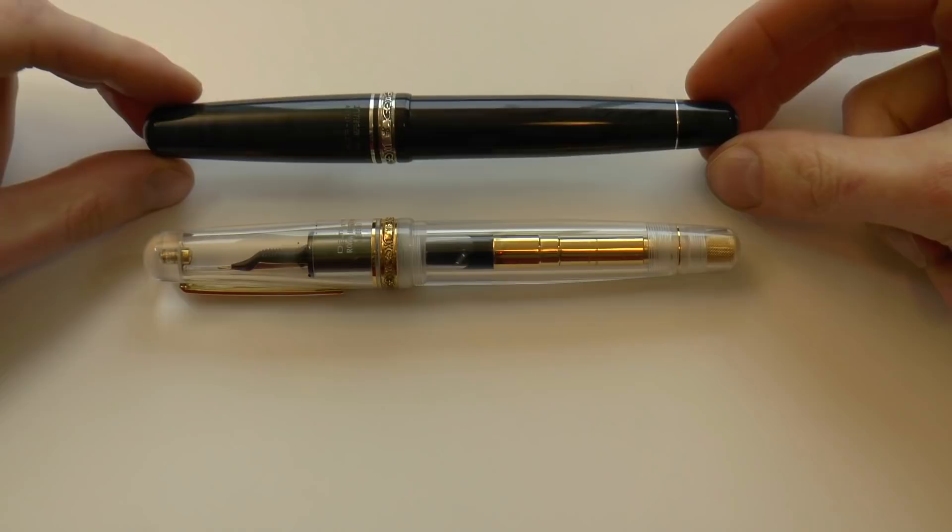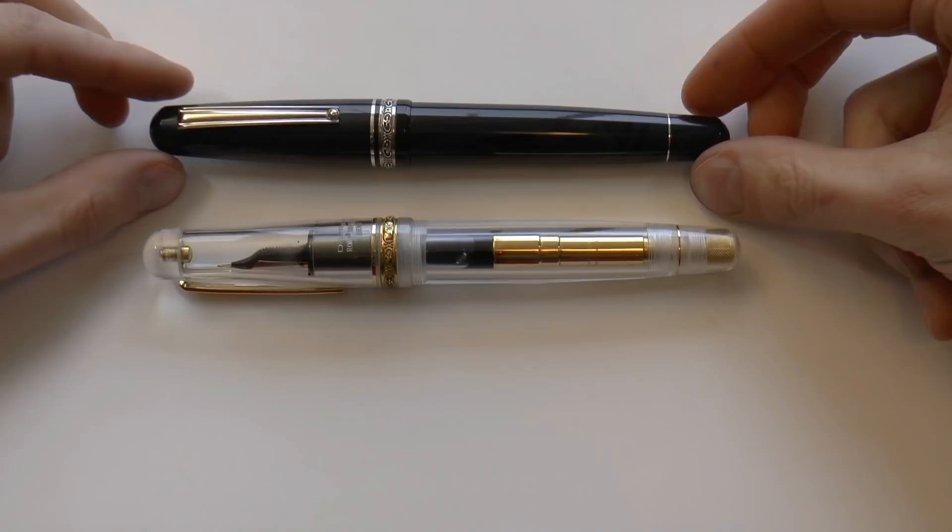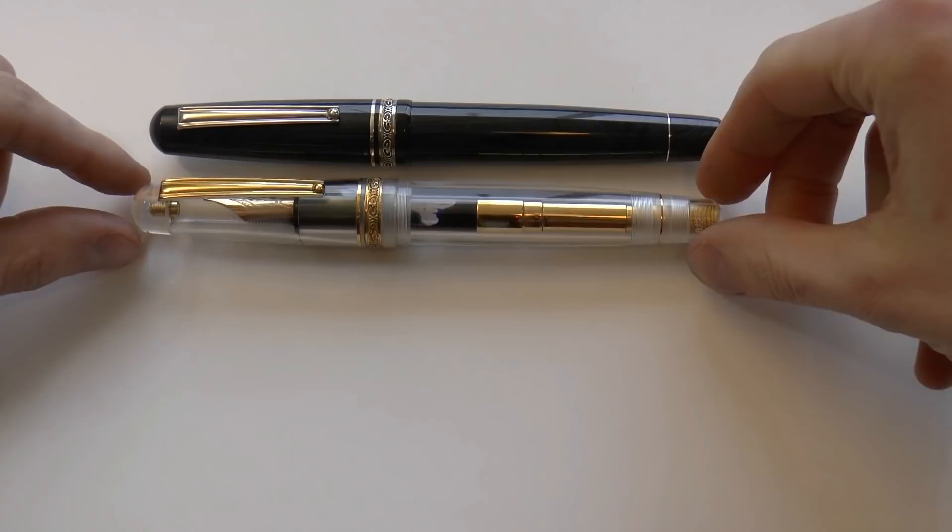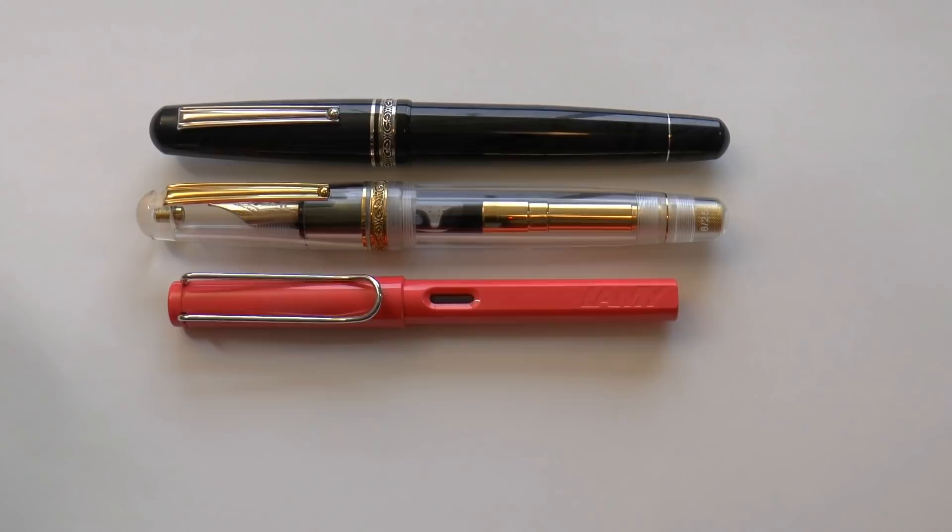So this Delta Roma Imperiale, made by Delta, Italian pen company that unfortunately is no longer in business. These are large pens. They are bigger than a Montblanc 149, but I thought for the sake of comparison, here you have these pens right next to a Lamy Safari. And you can see that these are big boys.